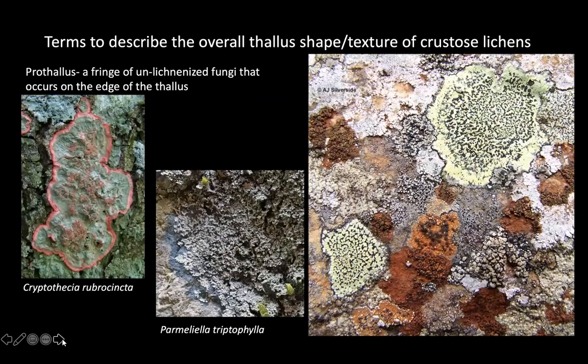Let's review some terminology you can use to describe the overall shape and texture of crustose lichens. If you were able to purchase Bruce McCune's Micro Lichens of the Pacific Northwest Keys, that's a great resource — there's a wonderful illustrated glossary in the first volume with all of these terms. I'll also share some online resources where you can find an online glossary for lichen terms. When you're keying out crustose lichens, look up any terms you don't know.